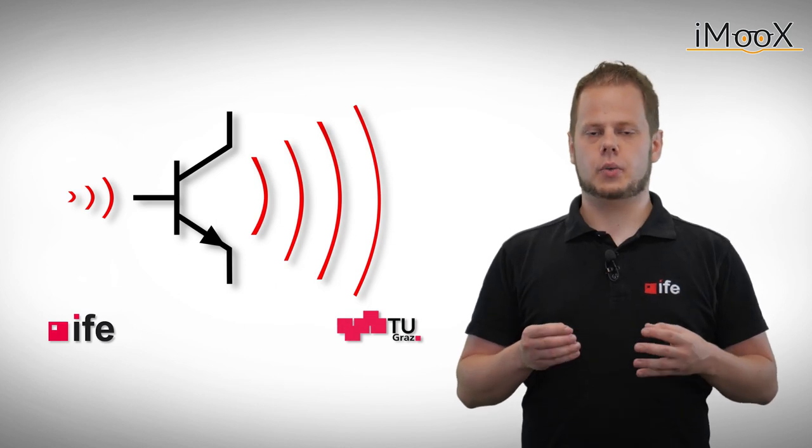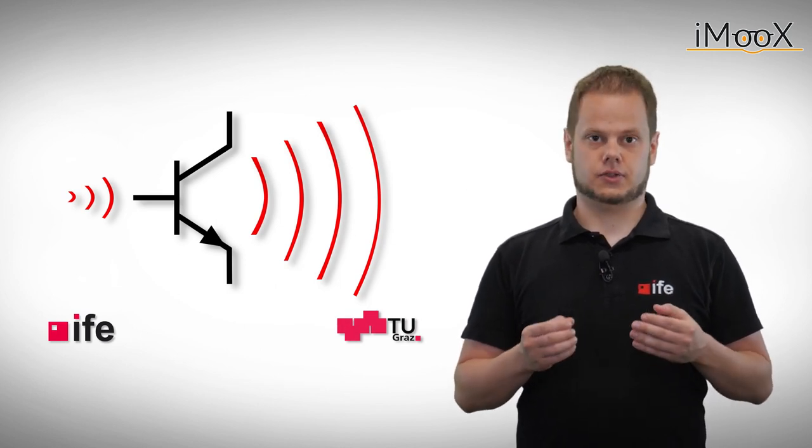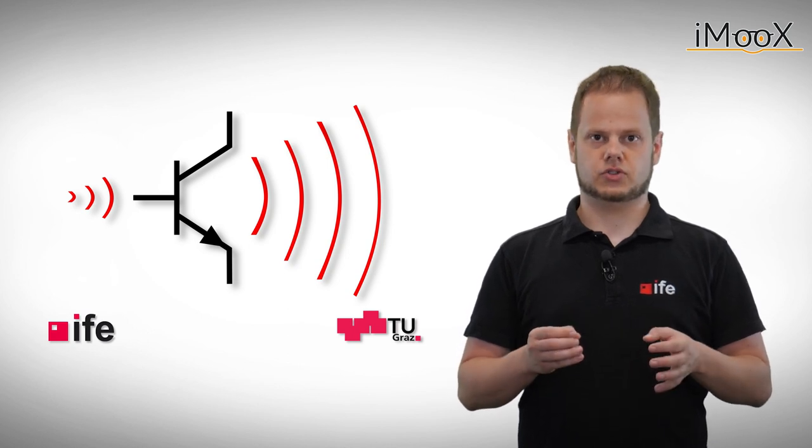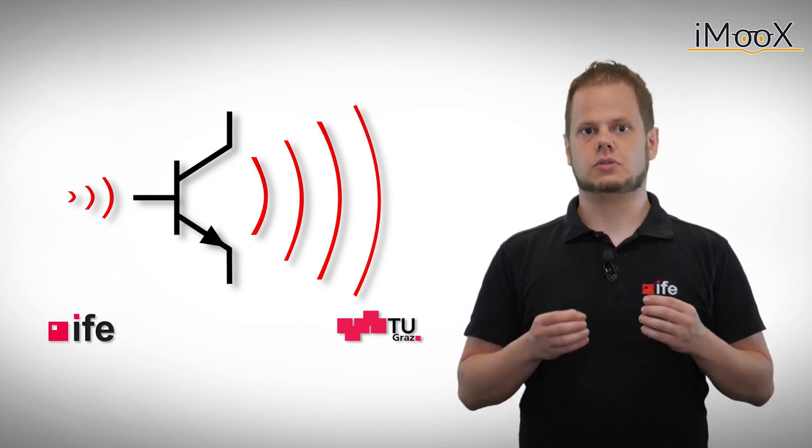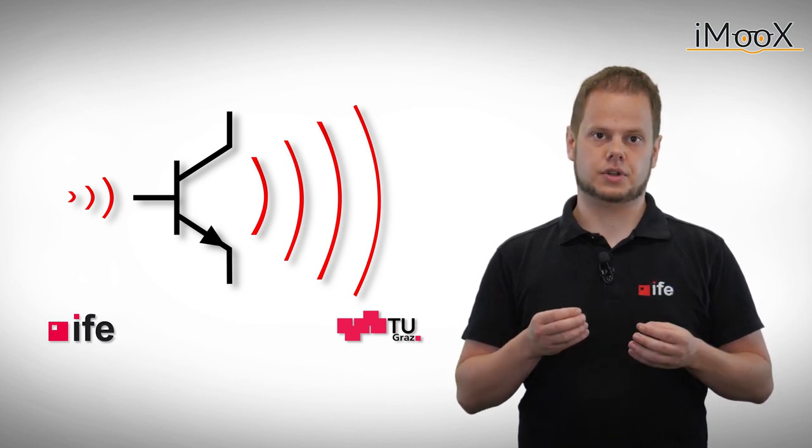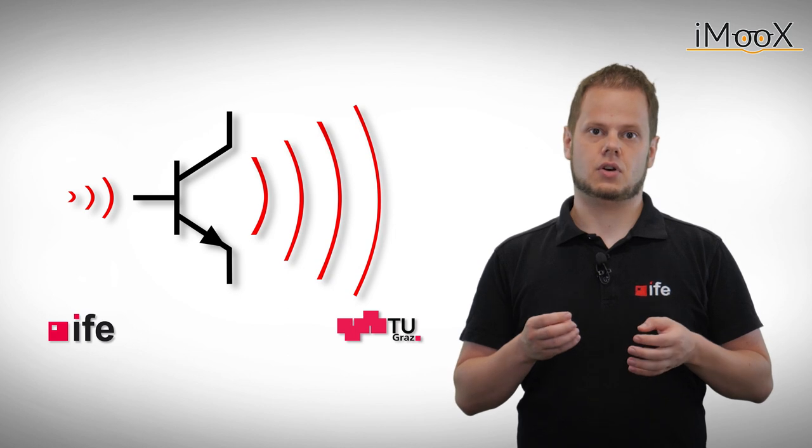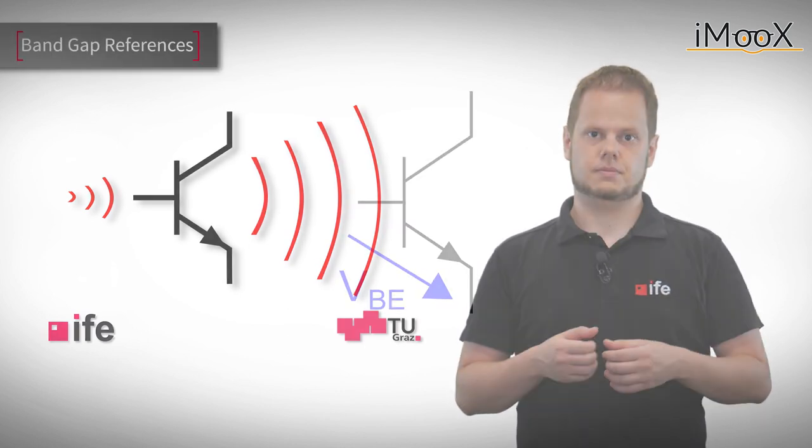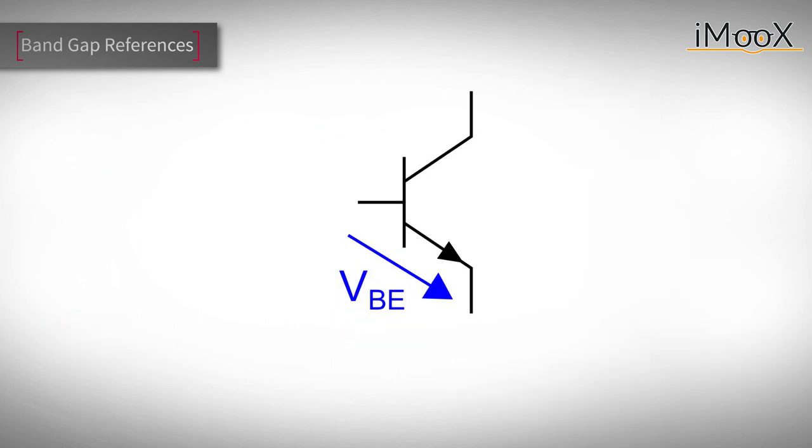Now we know how we can generate and duplicate a constant current. But many applications require a constant voltage, like analog to digital converters. A very popular circuit to generate a constant voltage is the VBE reference or more commonly called the bandgap reference.